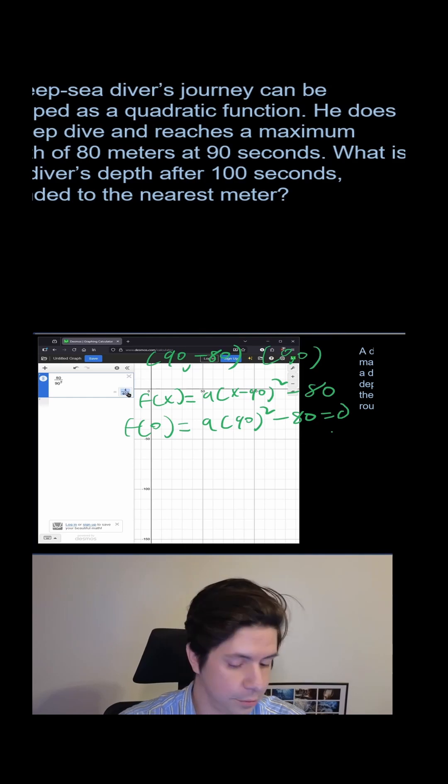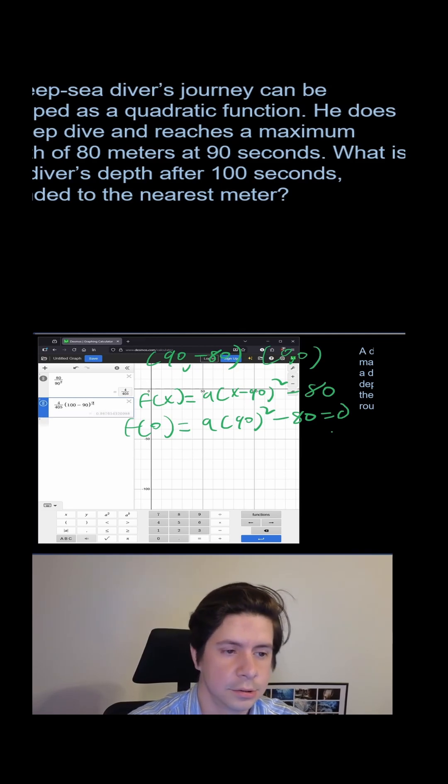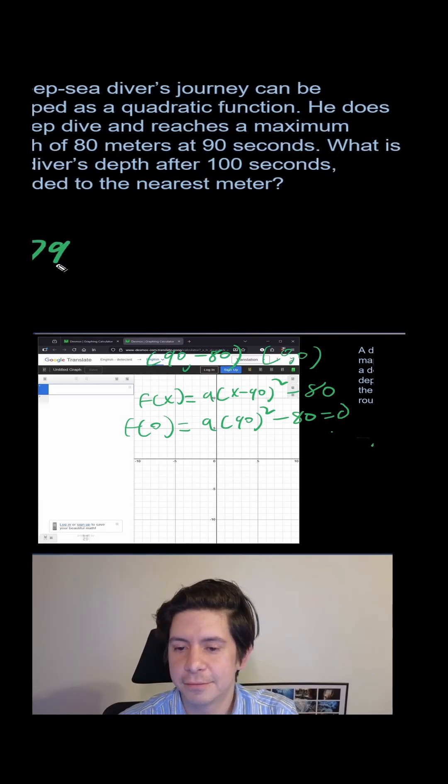Take that value, copy it, then plug that equation back in. Then we're going to have 100 minus 90 squared minus 80. And we're going to get negative 79. So our answer will be 79.